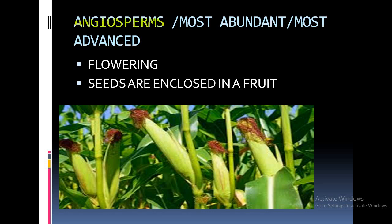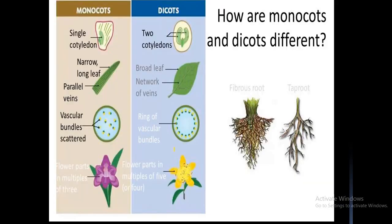Angiosperms are the most abundant and most advanced group of plants — approximately eight to nine out of every ten plants you observe are angiosperms. They are flowering plants with well-differentiated root, stem, and leaf. Seeds are enclosed inside a fruit. Maize is an example. Angiosperms are classified into two subcategories: Monocots and Dicots, based on the number of cotyledons.